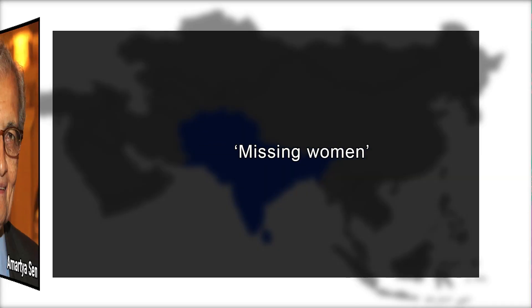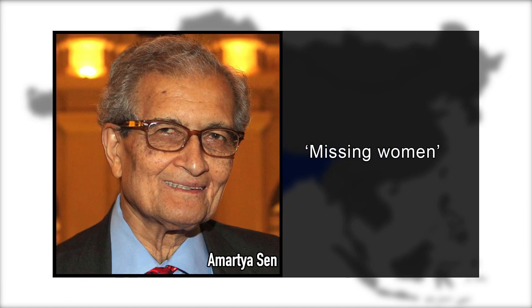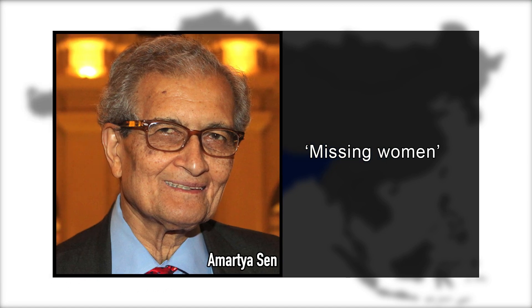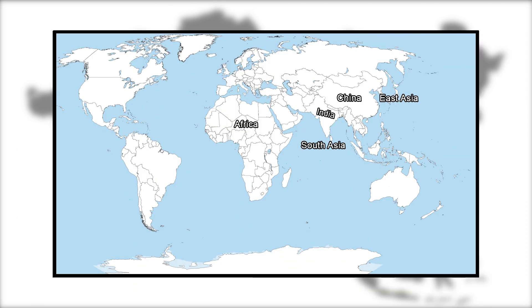The phrase 'Missing Women' was coined by Amartya Sen in 1990 and refers to the observation that in parts of the developing world, notably in India, China, other parts of South Asia, parts of East Asia and Africa, the ratio of women to men is suspiciously low. In this lecture, we will be focusing on the South Asian region and attempt to bring out the specificities of this phenomenon therein.